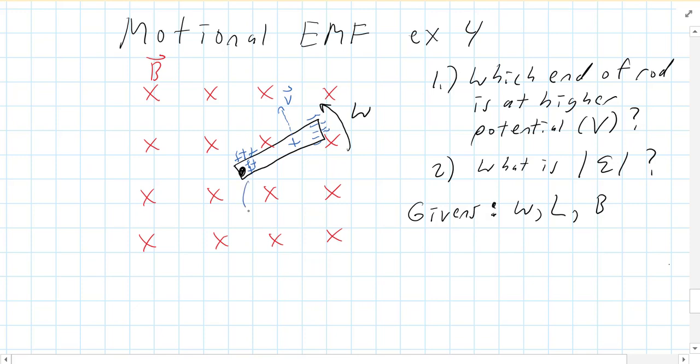So in this case, the bar, where it's attached and where it's spinning, that's your higher voltage, and then the outside of the bar is your lower voltage.